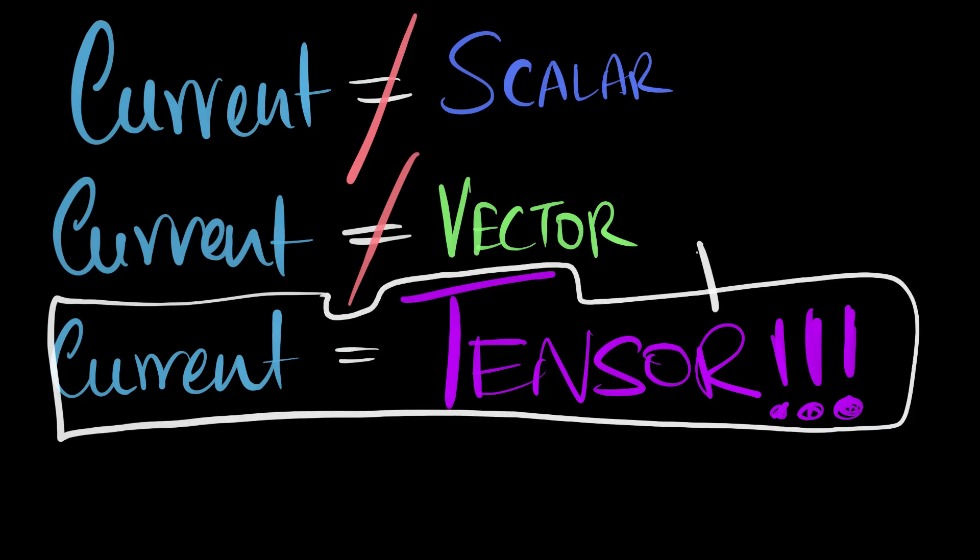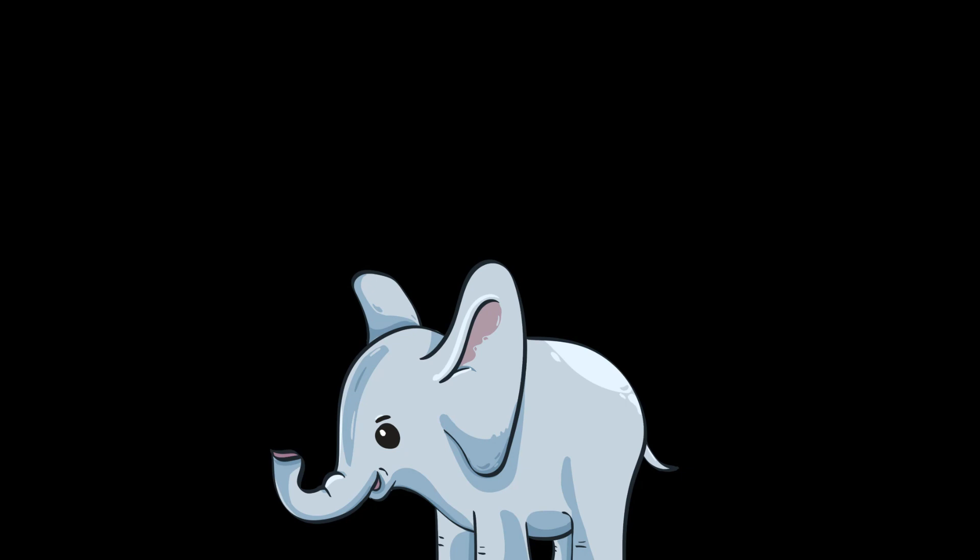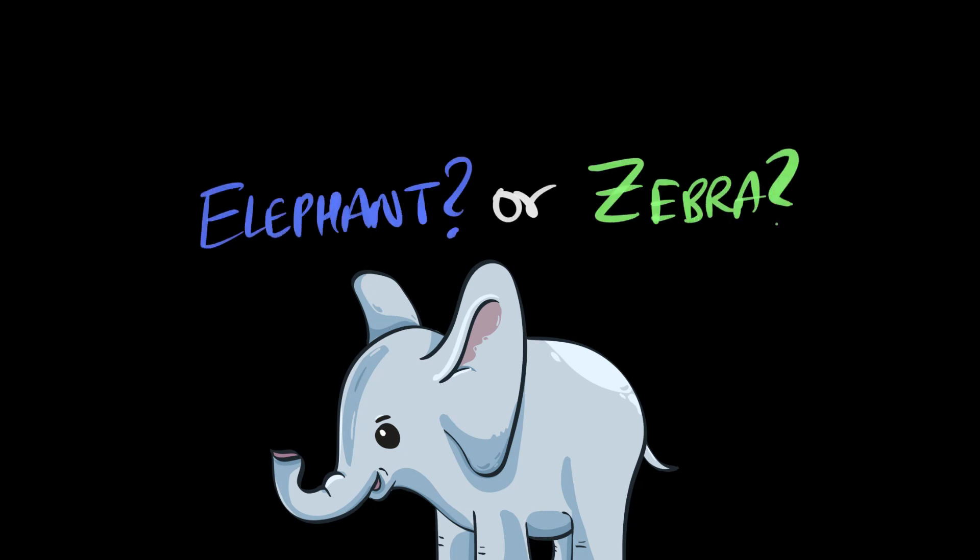And this actually confused me even more because then I'm like, what the heck is a tensor now? And I read up a lot and I haven't completely wrapped my mind around it, but that statement is just absurd. Let me tell you why. Here's my analogy. Imagine I asked you, is this an elephant or a zebra? And you came along and said, it's neither an elephant nor a zebra. It's an animal.